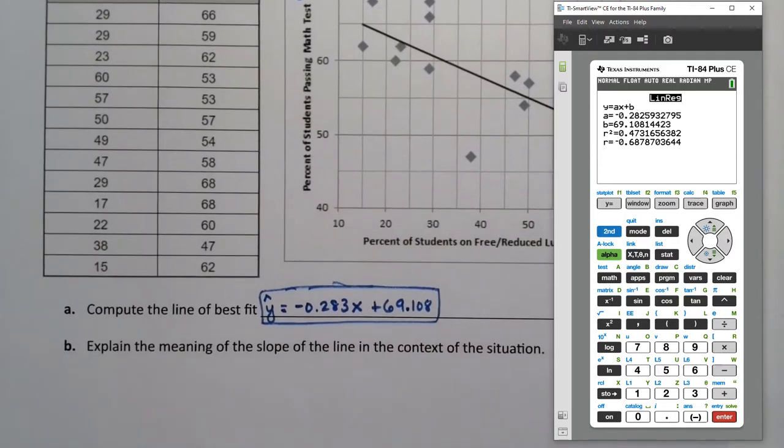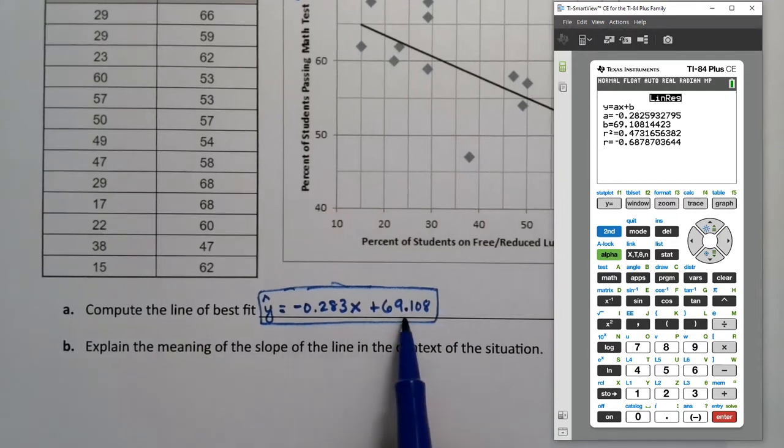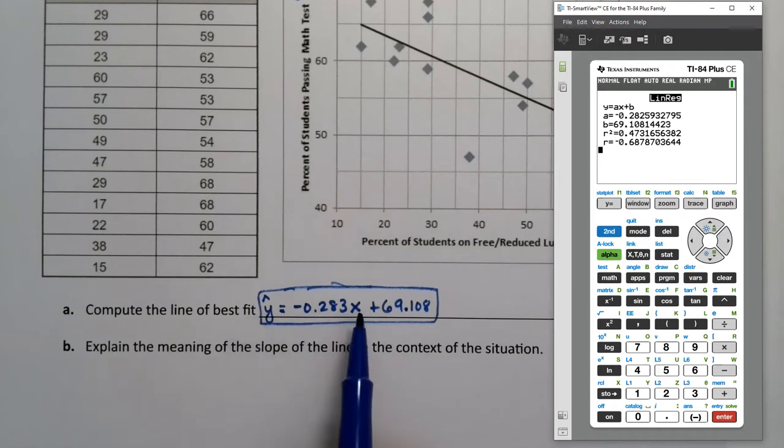So you put the a and b values that are given to you down in the equation. They're telling you that a is negative 0.283, so use that. You should have a number for a, a number for b, and letters for x and y, because they're variables.